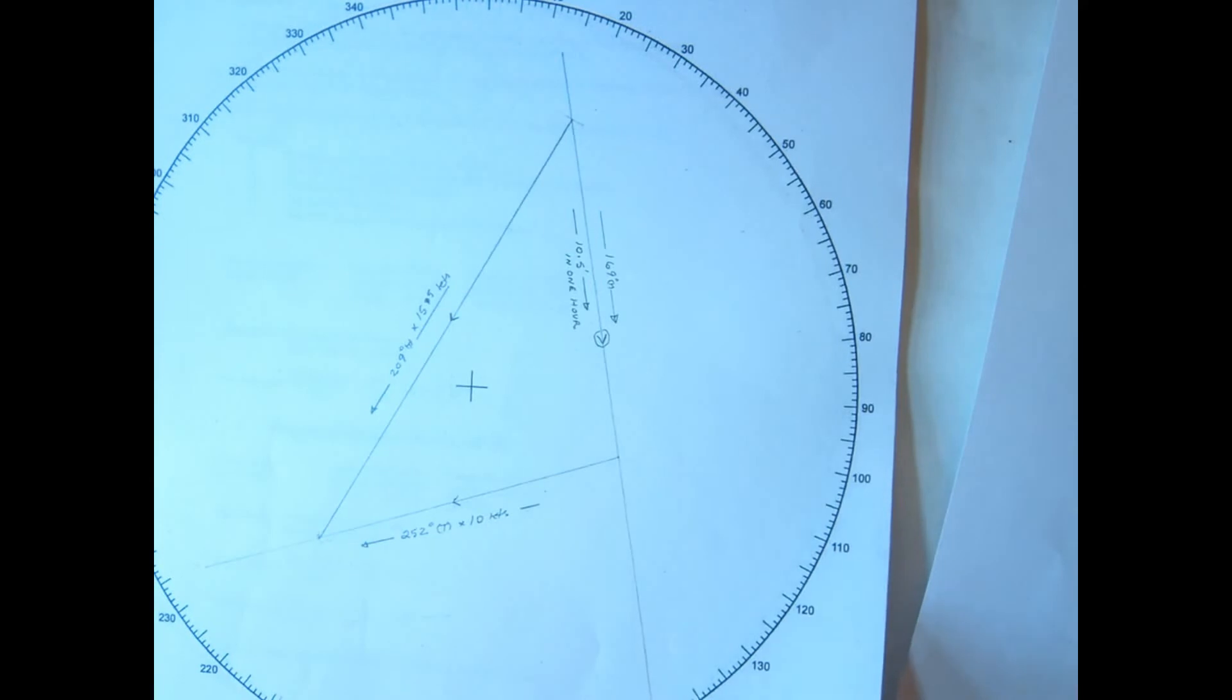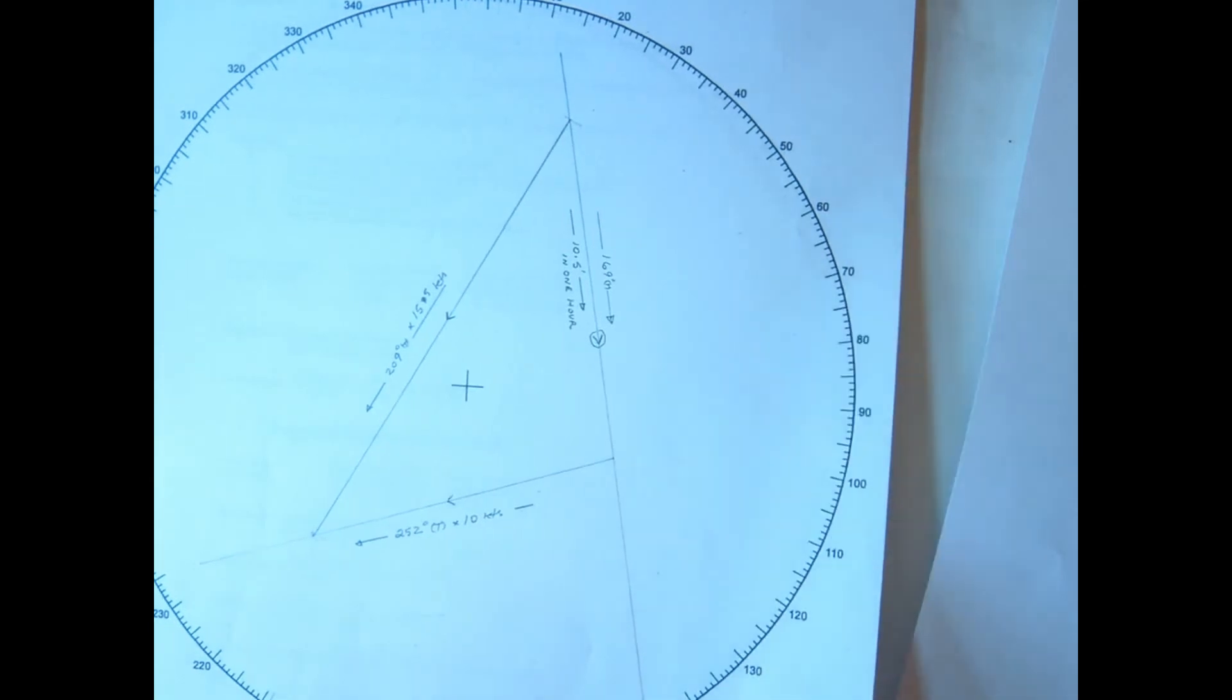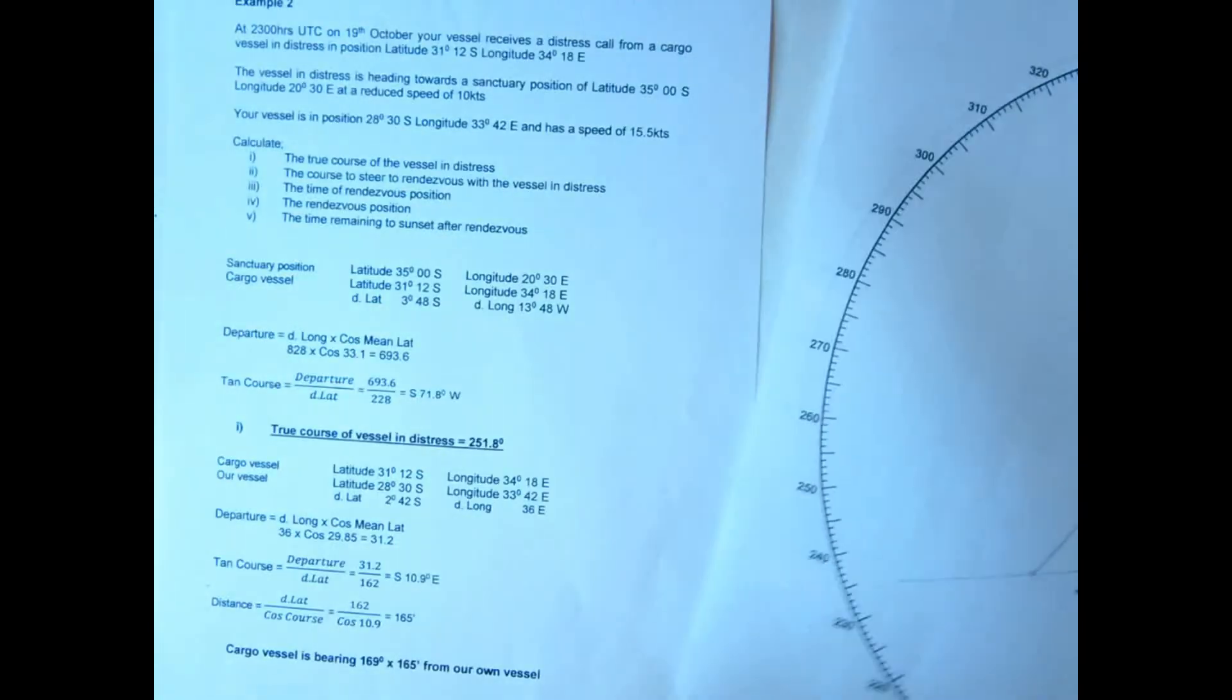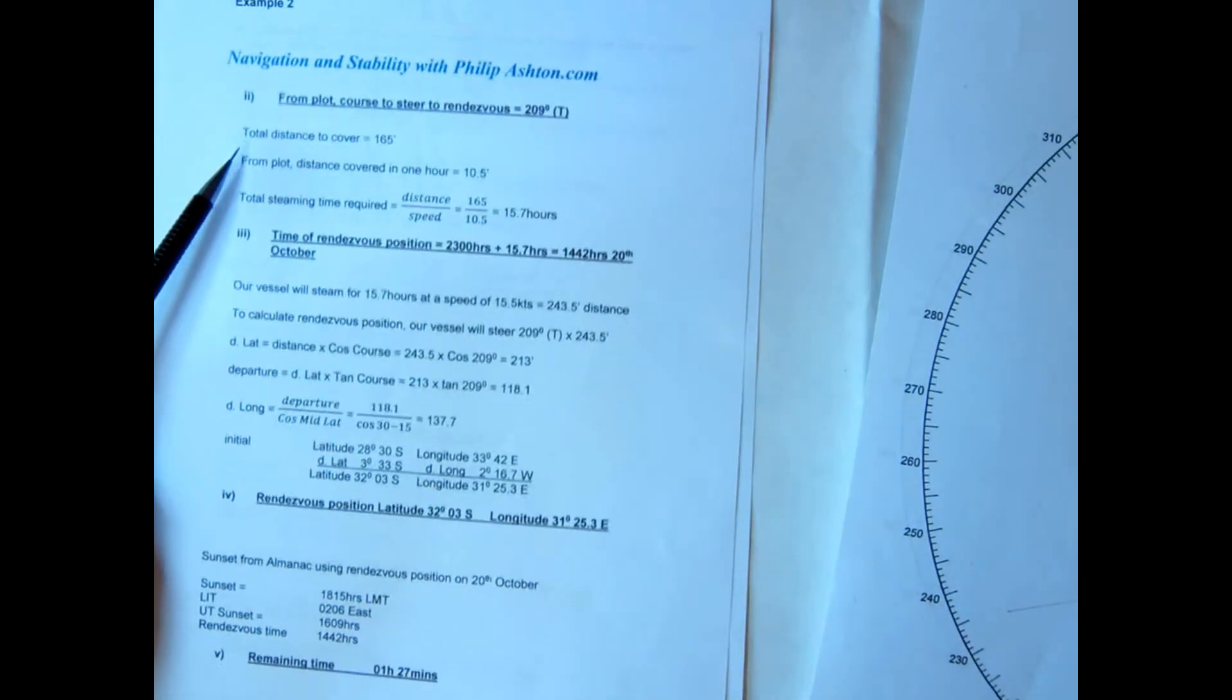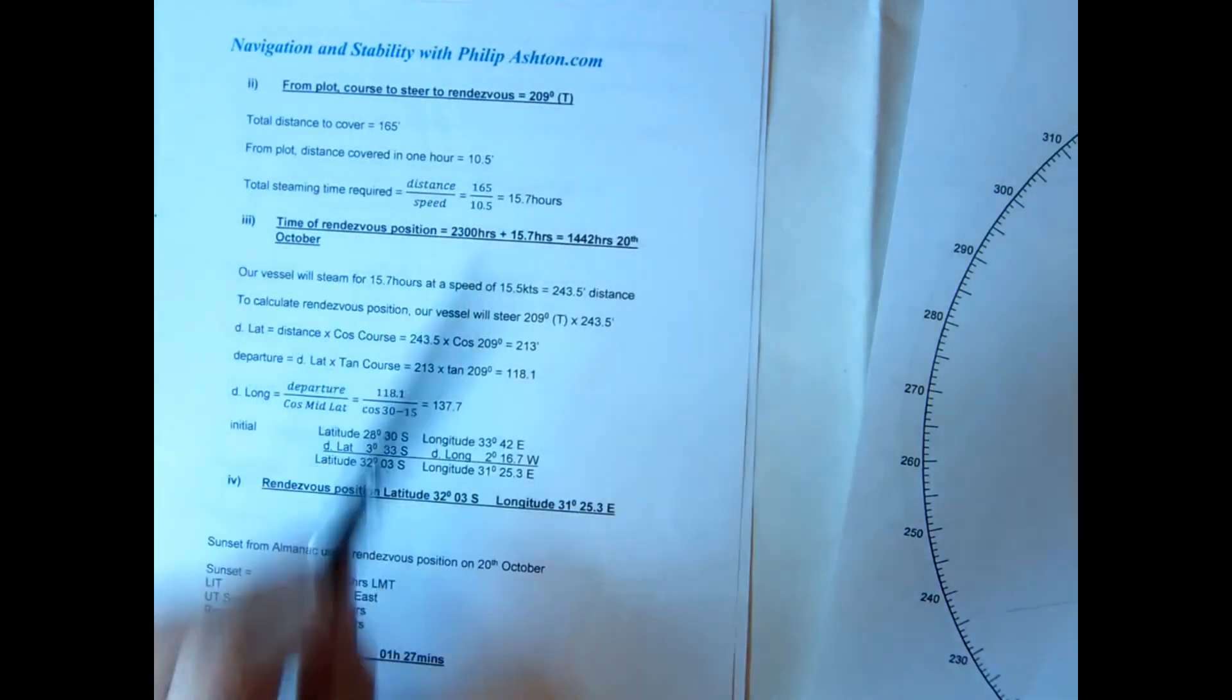True course the vessel 251.8, cargo vessel bearing 169 by 165. From the plot we worked out our rendezvous is 209. Total distance to cover 165, we've just seen from the plot we'll cover 10.5 miles in an hour.